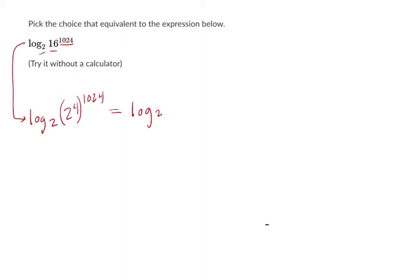To rewrite it as 2 to the 4,096, right? 4 times 1,024 is 4,096. And then you might see already the answer is 4,096.